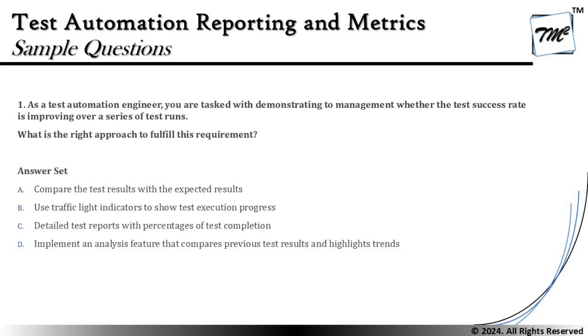Option C says: detailed test report with percentage of test completion. This is an interesting report to include, but not with the perspective of this question. Detailed reports with percentage of test completion are generally only for showing outcomes within one test run cycle, not a series of runs. It's very important to correlate each option back to the question — failing to do that is where we generally go wrong.